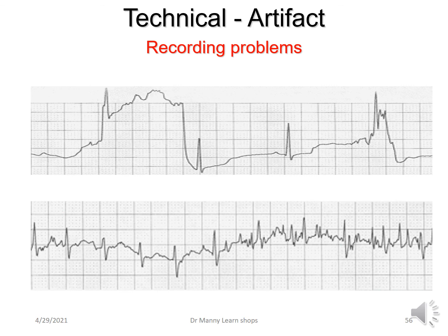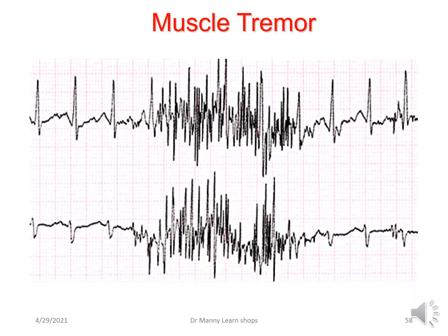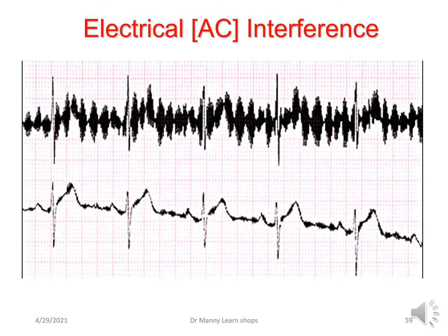When it comes to recording the ECG, often there are technical problems — problems you encounter when recording. There are three main ones here. First, a wandering baseline, which is due to movement, loose connections, or incorrectly connected electrodes. Second, muscular tremor — also referred to as somatic tremor — the patient is shivering, moving, has Parkinson's disease, is cold, nervous, or restless. Third, AC interference coming from faulty electrical equipment, which means you need to call your bioengineer, because you cannot interpret this ECG as it is.